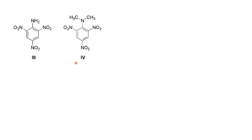Now we will see structures 3 and 4. Structure 3 is named as 2,4,6-trinitroaniline. On the other hand, structure 4 is a tertiary amine substituted molecule, called NN-dimethyl-2,4,6-trinitroaniline. So structure 3 looks like aniline and structure 4 looks like NN-dimethylaniline, but both have three nitro groups.